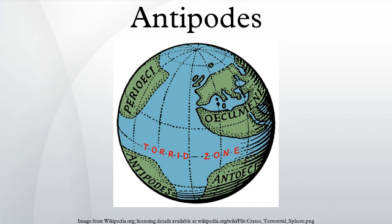Historical significance: Pomponius Mela, the first Roman geographer, asserted that the Earth had two habitable zones, a north and south one, but that it would be impossible to get into contact with each other because of the unbearable heat at the equator. From the time of St. Augustine, the Christian Church was skeptical of the notion of the Antipodes. Augustine asserted that it is too absurd to say that some men might have set sail from this side and, traversing the immense expanse of ocean, have propagated there a race of human beings descended from that one first man.